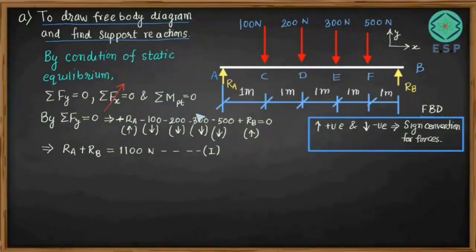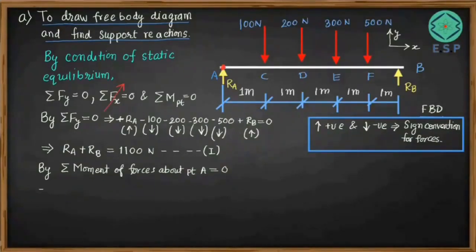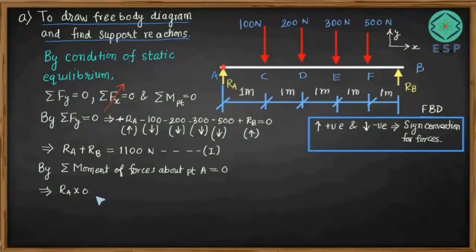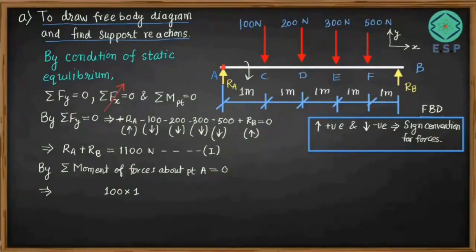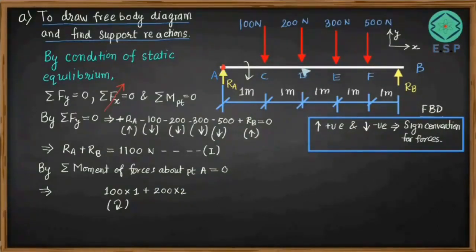We now apply the third condition: summation of moments about point A equal to zero. RA acts at point A so its moment arm is zero — no moment from RA. The force of 100 N at distance 1 m causes clockwise moment: +100×1. Then +200×2 (clockwise), +300×3 (clockwise), and +500×4 (clockwise). RB at distance 5 m from A causes anticlockwise rotation, so it is negative: −RB×5 = 0.